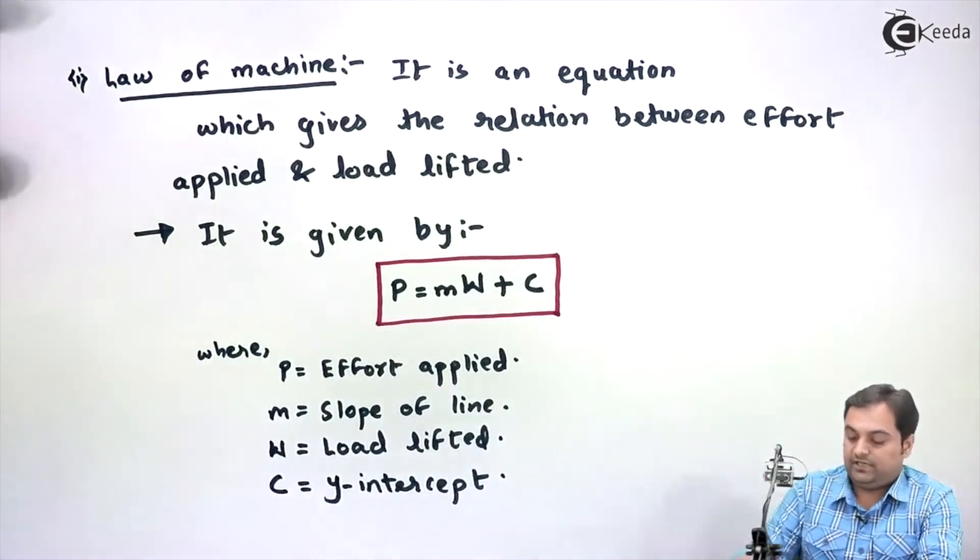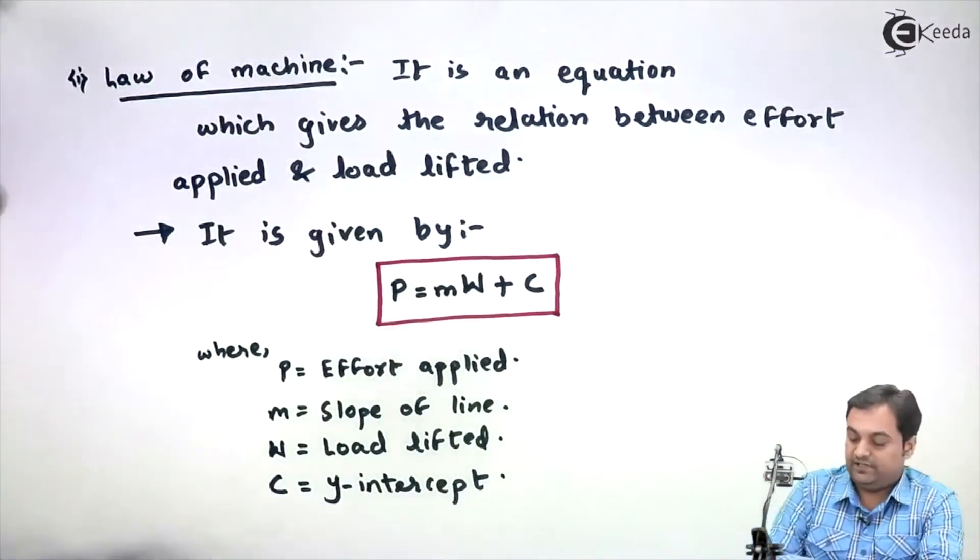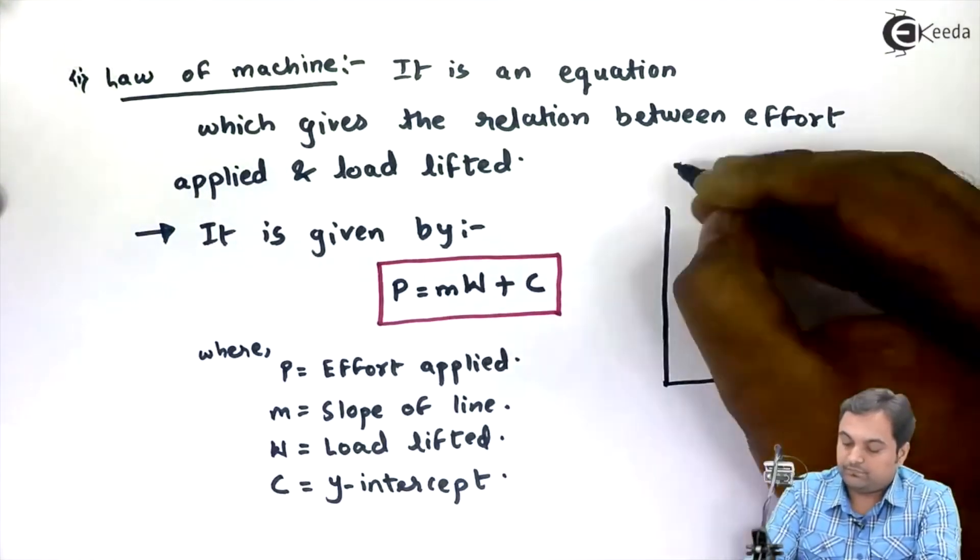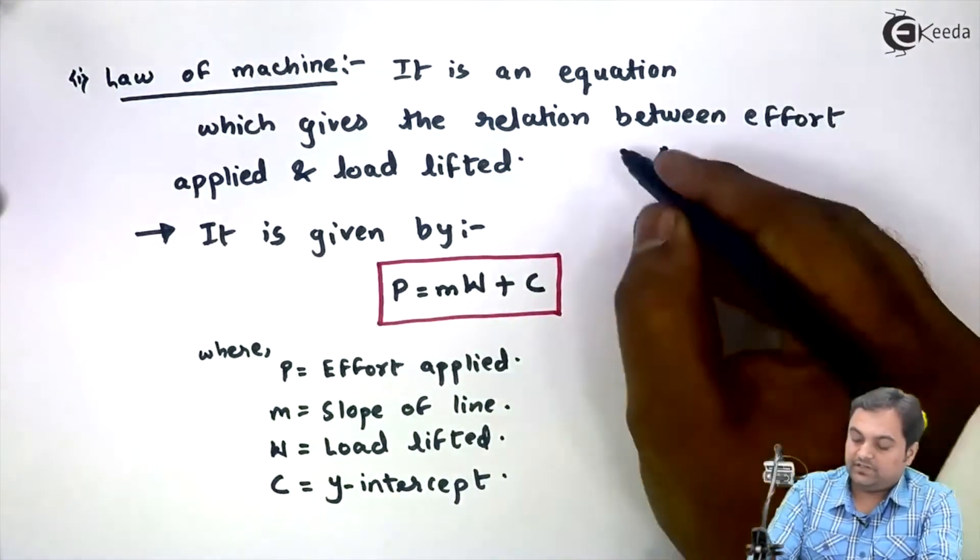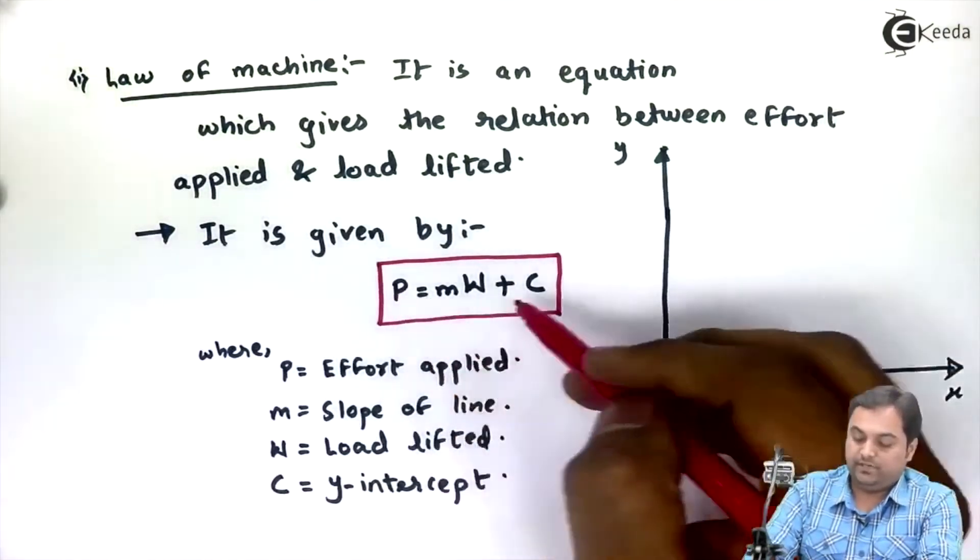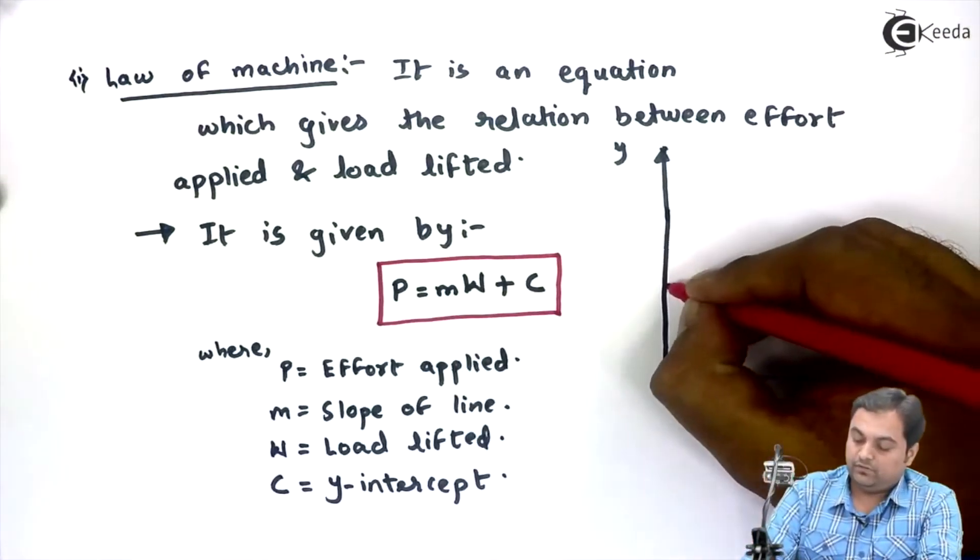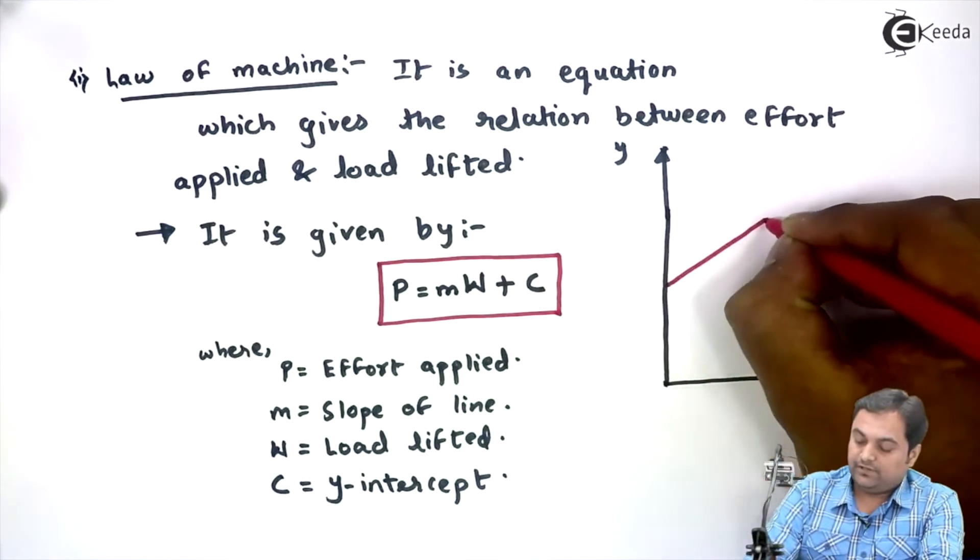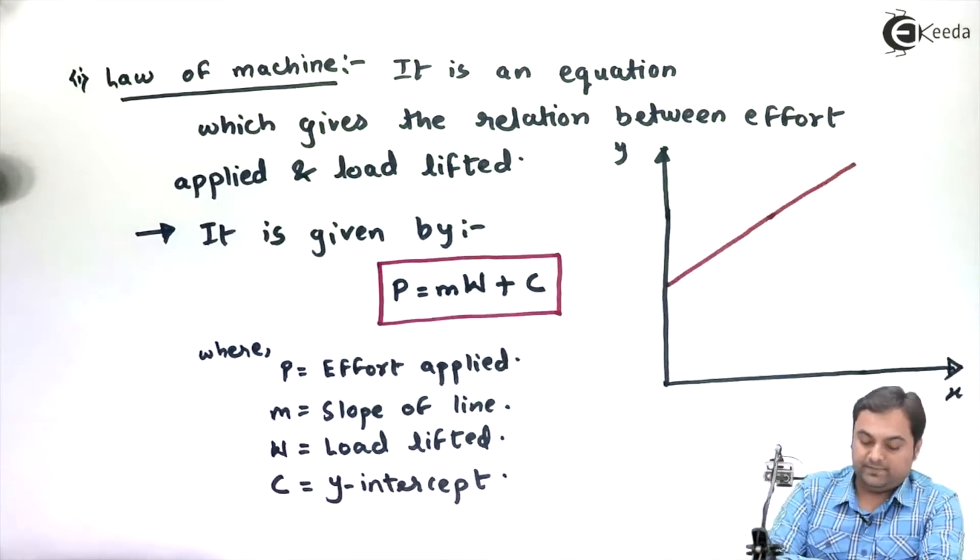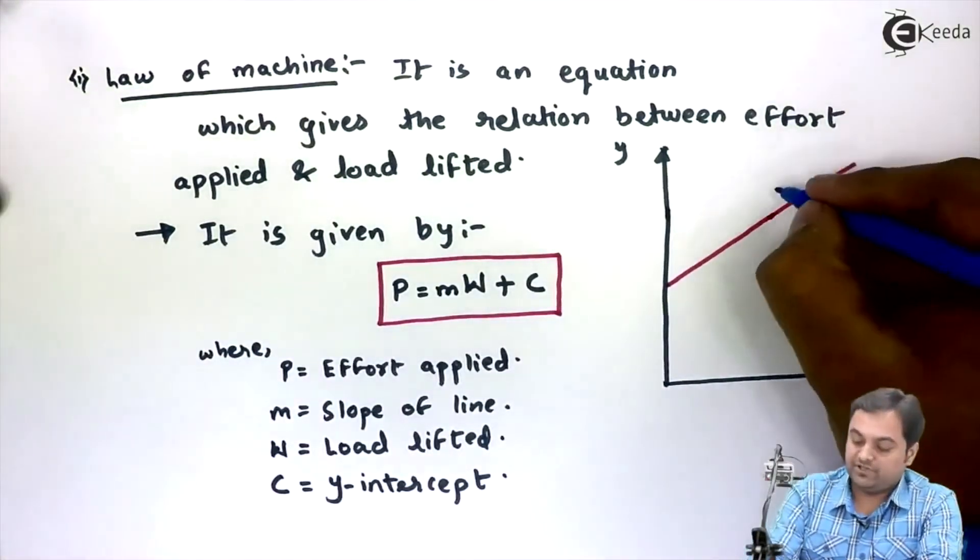This law of machine can even be explained with the help of a diagram. Here we are having x and y axis, and law of machine is nothing but expression for a straight line.